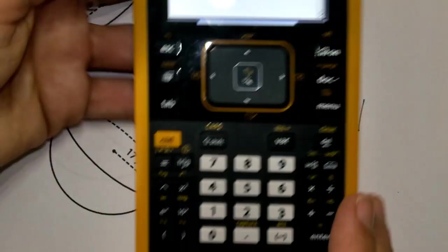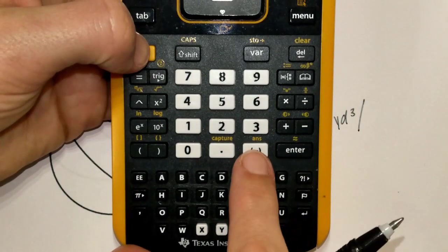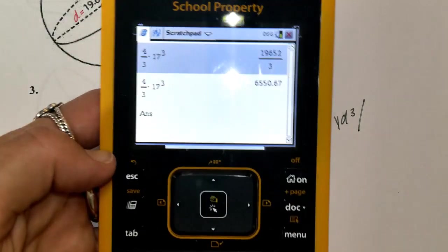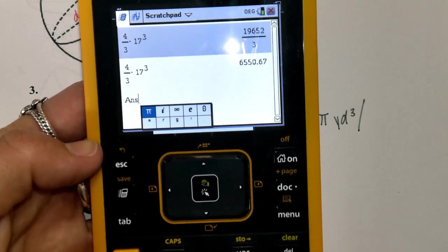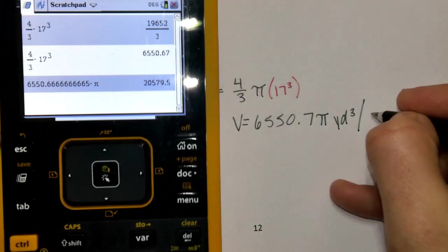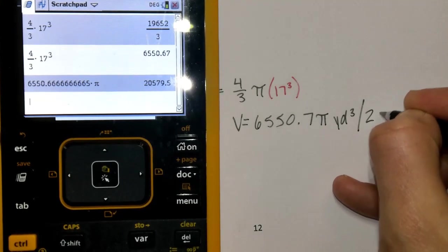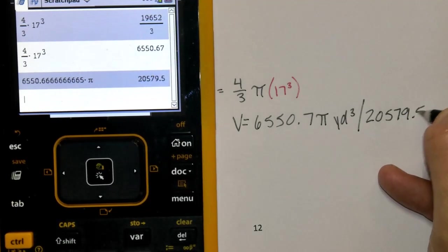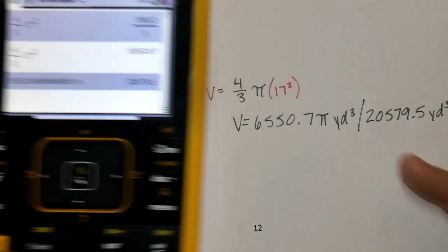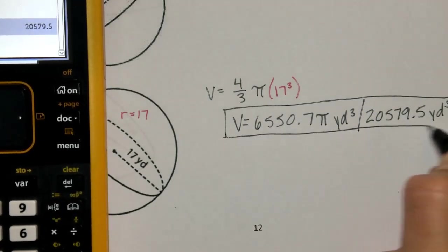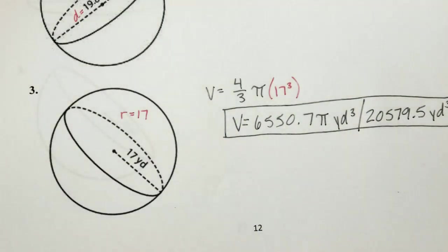With this calculator, press ctrl and the negative button to recall the answer, then type the pi symbol. We get 20,579.5 yards cubed. So again, we have both: in terms of pi and rounded to the nearest tenth.